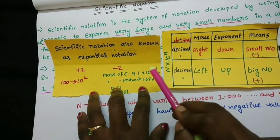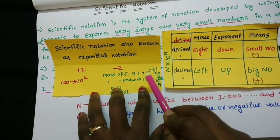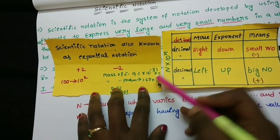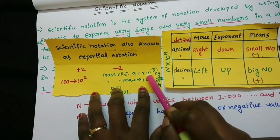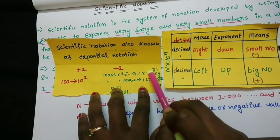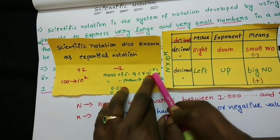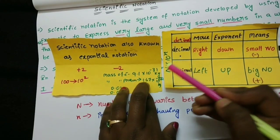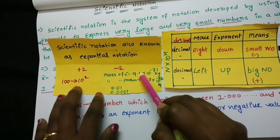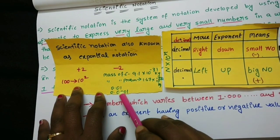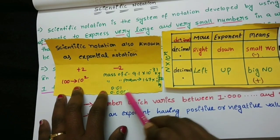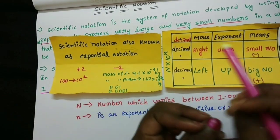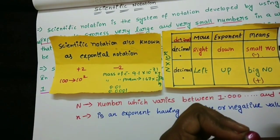If the exponent is negative, the value is less than 1. A negative power means the value is a small number — less than the value when the decimal moves to the left.